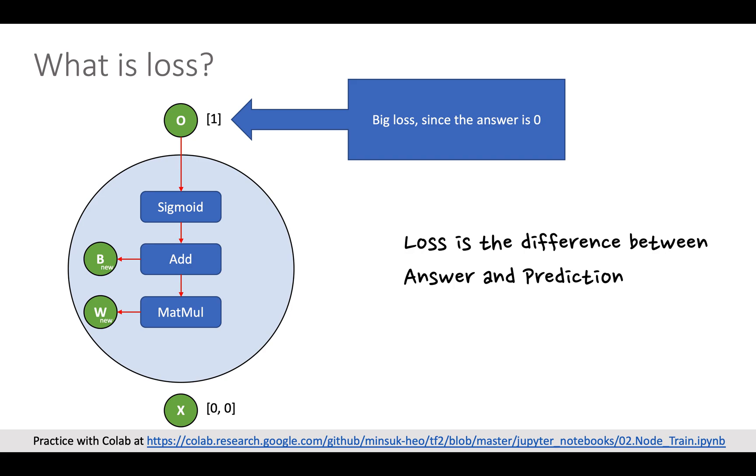In this example, you can see the answer and the prediction is different. So this is loss. And if answer and prediction is equal, then you can see there is no loss in this data.